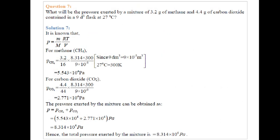Next, what will be the pressure exerted by a mixture of 3.2 grams of methane and 4.4 grams of carbon dioxide contained in a 9 decimeter cube flask at 27 degrees centigrade? Two gases are there with given mass 3.2 gram and 4.4 gram. Pressure has to be found. So P equals m/M times RT/V.